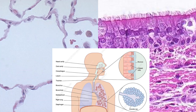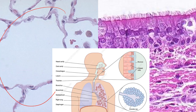At the alveoli — where gas exchange actually occurs, with carbon dioxide and oxygen being exchanged — the tissue is as thin as possible. Here, simple squamous epithelial tissue is present, which is ideal for diffusion across alveolar walls.